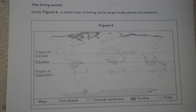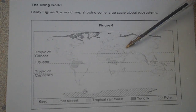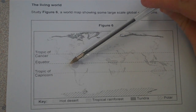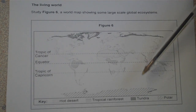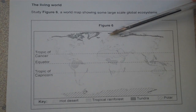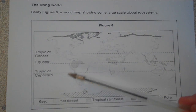Before we even read the question it's good to have a bit of a study of the map. Looking closer, we've got hot deserts in light grey. Tropical rainforests with horizontal lines in them. Tundra is the dark areas up in the northern hemisphere. And polar is slightly wider shaped diagonal lines.